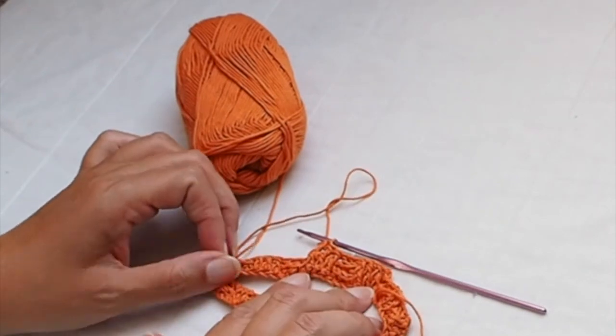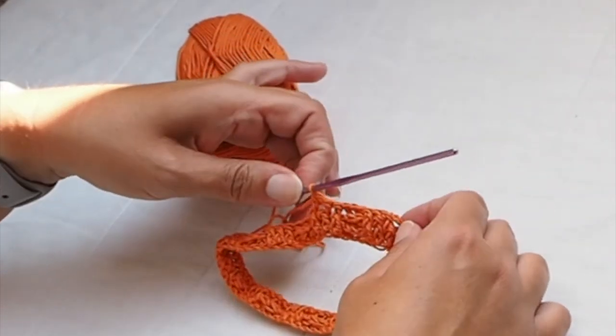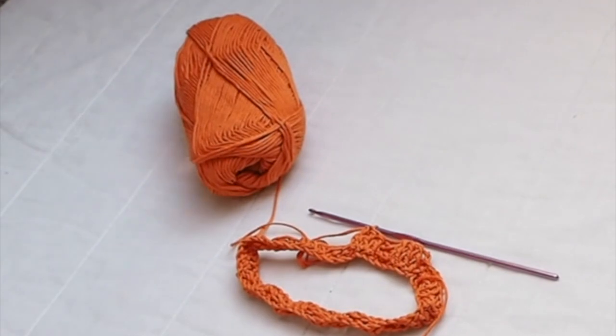And at the beginning I always chain three as a first double crochet. And this is a stretchy pattern so you can perfectly use it as a sleeve for the bottle.